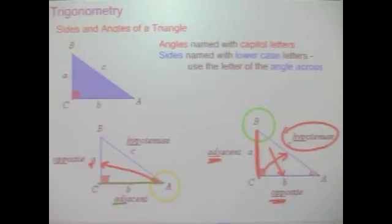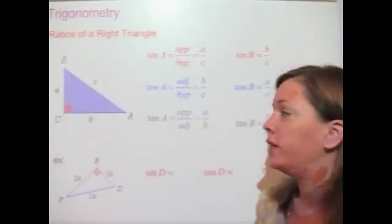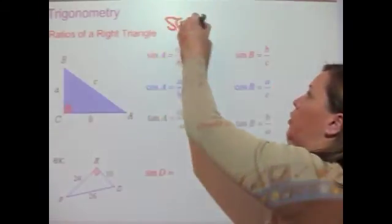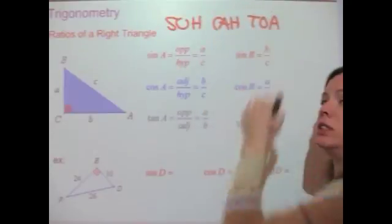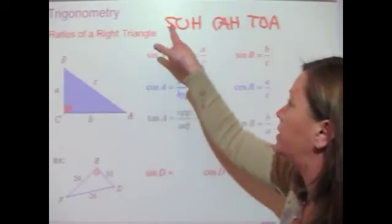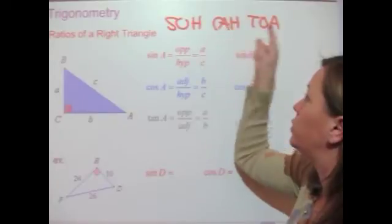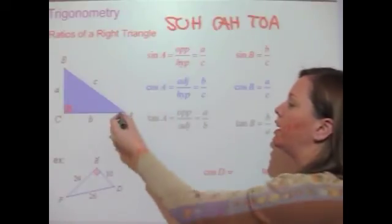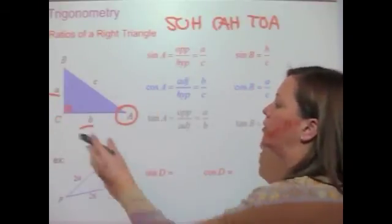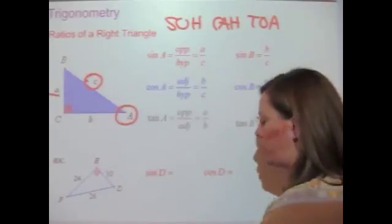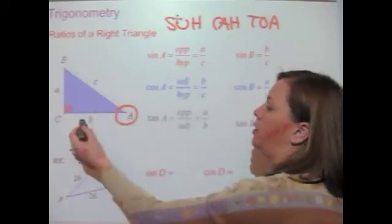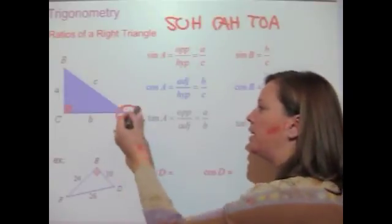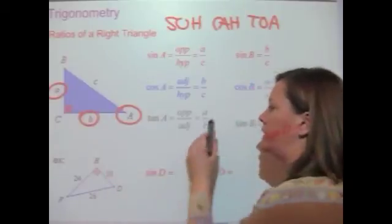Let's set up the trigonometric ratios of a right triangle. You don't need to memorize these — they're on the AIMS reference sheet. You may have heard of SOHCAHTOA: sine equals opposite over hypotenuse, cosine equals adjacent over hypotenuse, and tangent equals opposite over adjacent. For angle A specifically: sine of A equals a over c, cosine of A equals b over c, and tangent of A equals a over b.